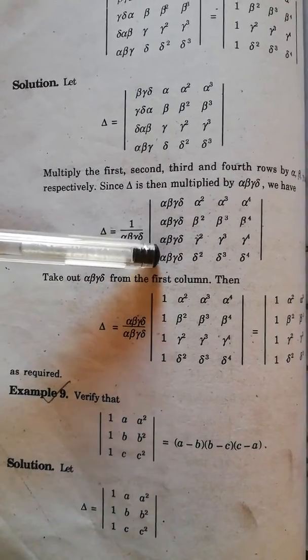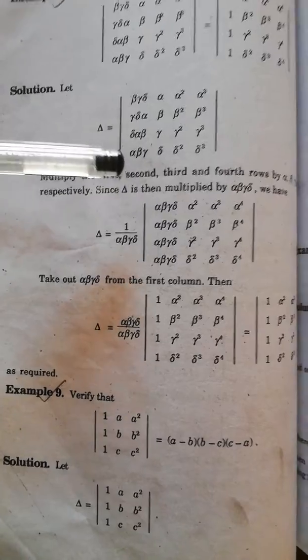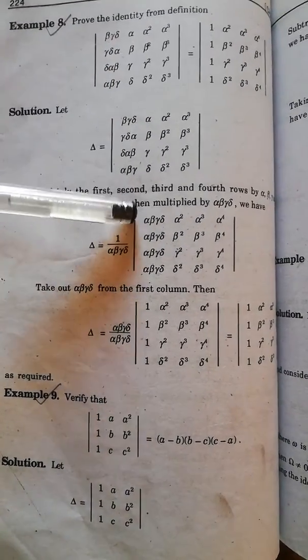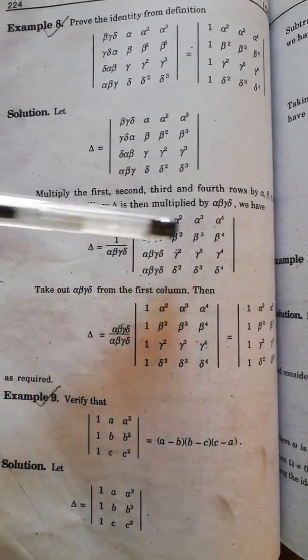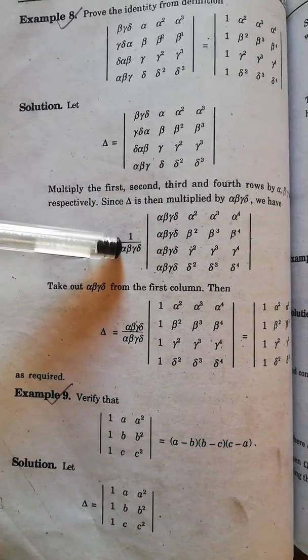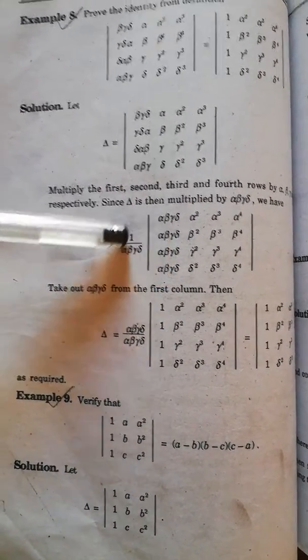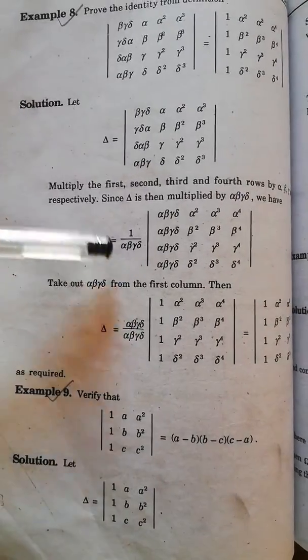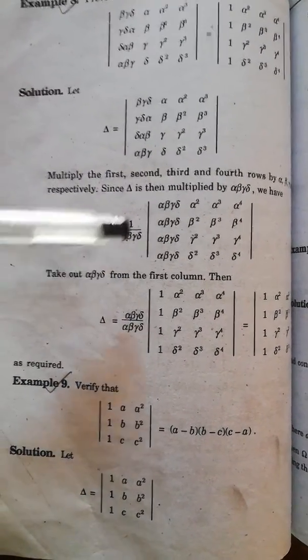And delta with the fourth row. I have explained earlier that when you multiply the entries from any row, then you have to divide it. So alpha, beta, gamma, and delta we have to divide it so that the equality is balanced.